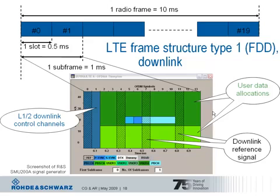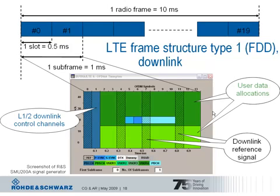At the beginning of each subframe there are certain Layer 1 and Layer 2 downlink control channels. These carry information about the scheduling decisions for the different UEs in a cell. The UE first reads these downlink control channels to find out whether there are resource assignments with user data inside the upcoming subframe. The actual user data allocations are shown in green, and in this example two users share the available 10 MHz bandwidth.